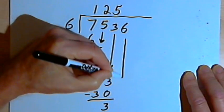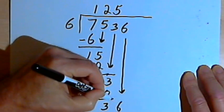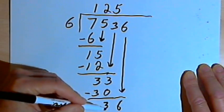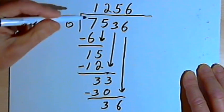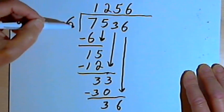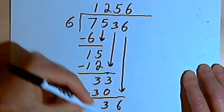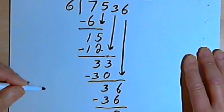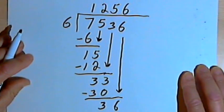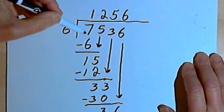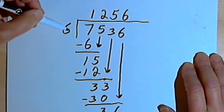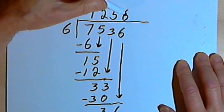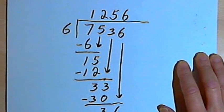I bring down the next number, which is a 6. So now I want to divide 6 into 36. 6 goes into 36 6 times. I'm going to multiply that 6 by the 6 that I divided by. 6 times 36 is 36. I'll subtract. I end up with a 0. I've got no more numbers to bring down. So that means that 7,536 divided by 6 is 1,256. So let's do a few more.